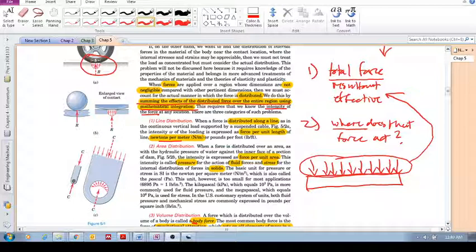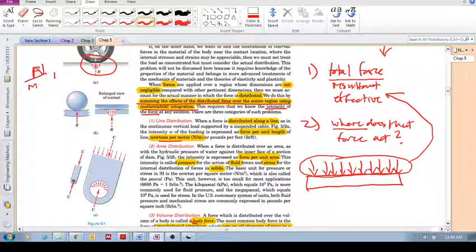What is intensity? Intensity is basically force per length, force per area, or force per volume - so Newton per meter, Newton per meter squared, or Newton per cubic meter. These are intensities. We've got line distribution, distribution of a force over an area, and distribution of a force over a volume.